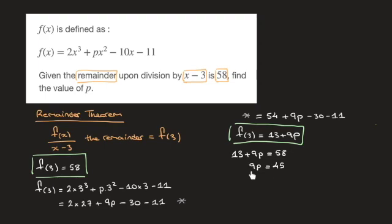And now dividing both sides by 9 leads to p is equal to 45 over 9. In other words, p is equal to 5. And that's the answer.